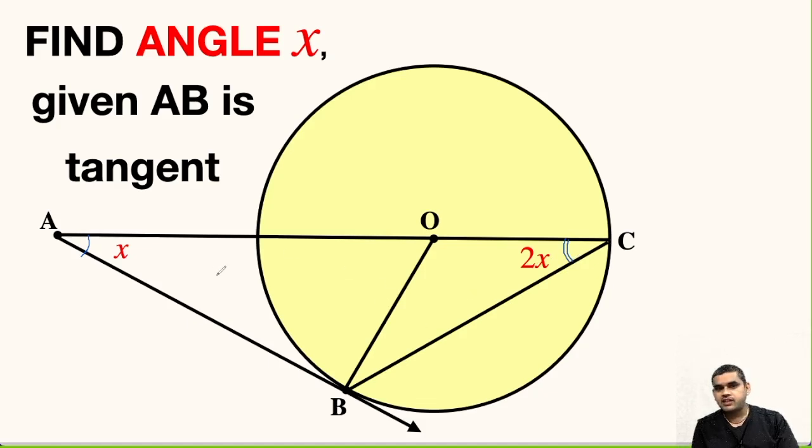Now we need to find the value of x. In order to solve this question, we must know about property of tangent to a circle. If we have an external point and a tangent is drawn to a circle, then the line joining the center of the circle to the point of contact is always perpendicular to the tangent.